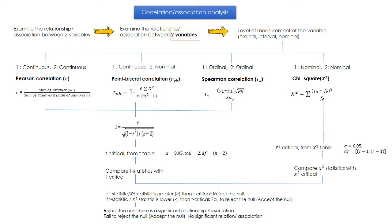When do we actually use correlation? When we would like to examine a relationship or association between two variables. When you have a question about relationship or association and you have only two variables, you are going to use correlation or association analysis. This is your statistical analysis approach, and you must have only two variables.